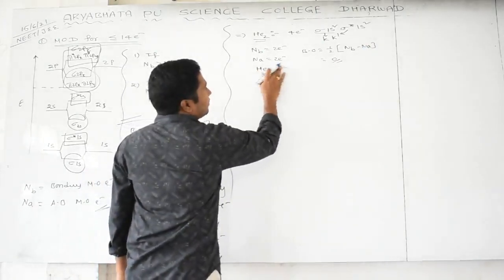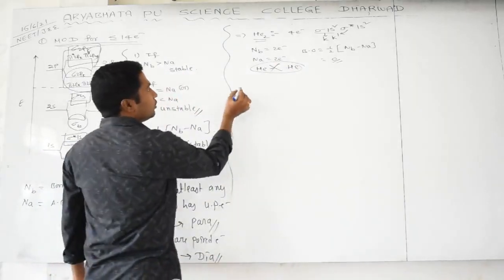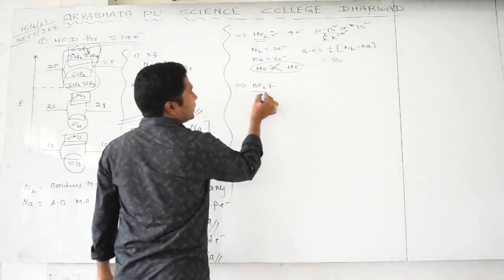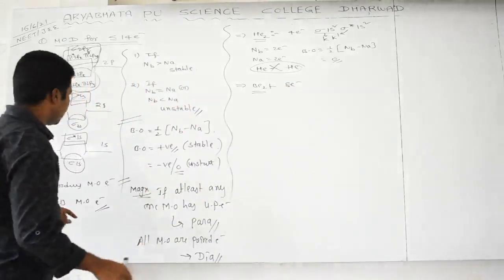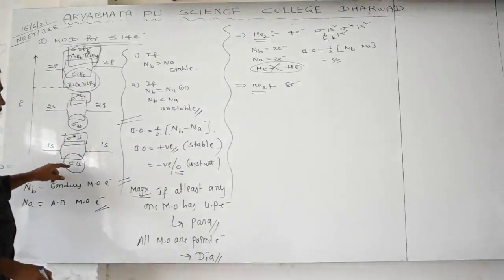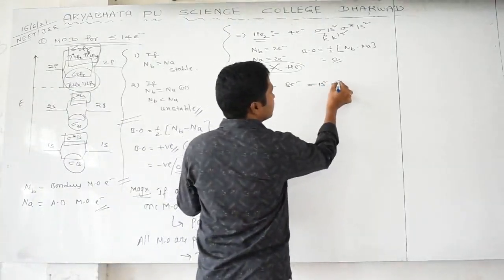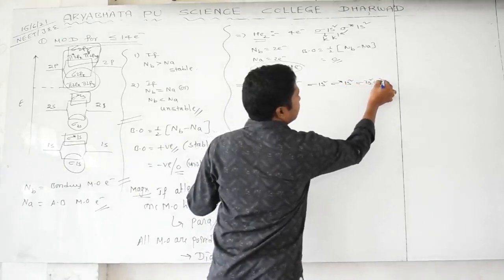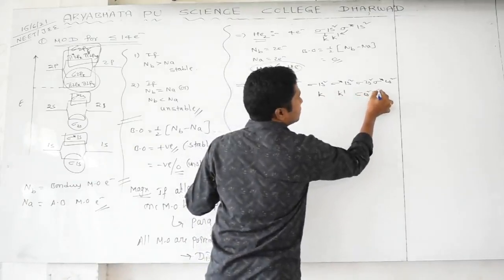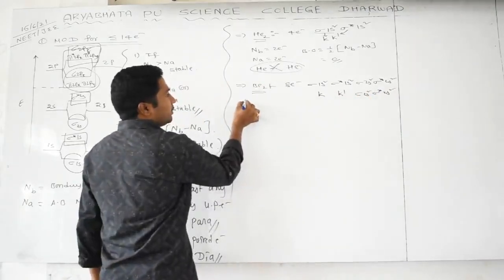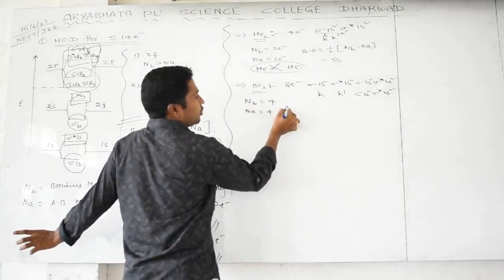Example: Be₂ molecule. Beryllium has 4 electrons each, total 8 electrons. Electronic configuration: σ1s², σ*1s², σ2s², σ*2s², denoted KK'(σ2s²)(σ*2s²). Bonding electrons = 4, anti-bonding electrons = 4. Bond order = ½(4−4) = 0. So Be₂ also does not exist.